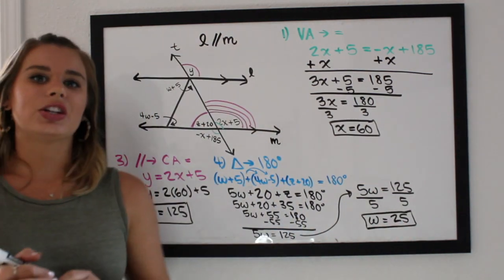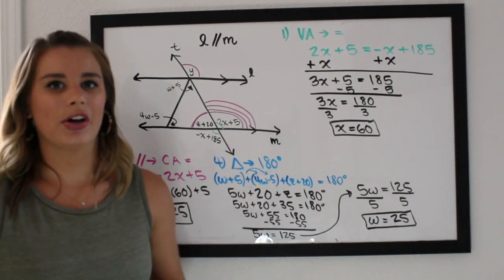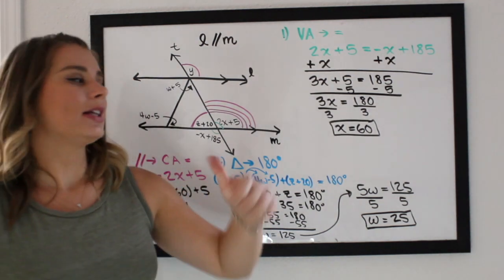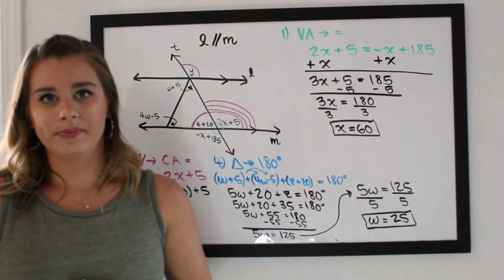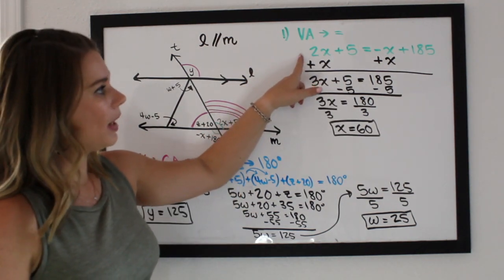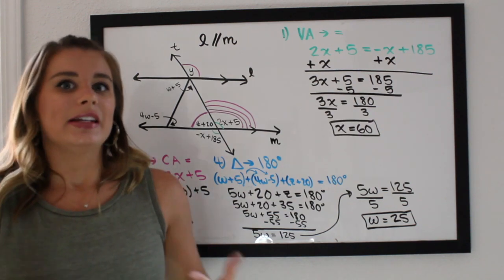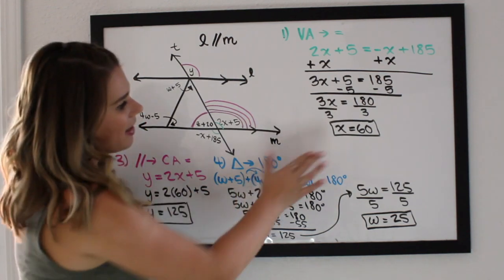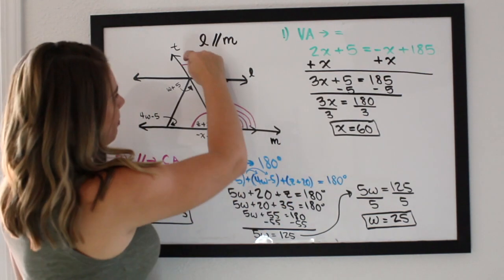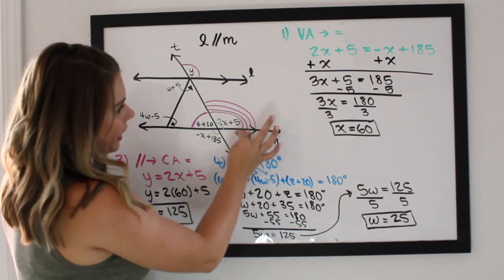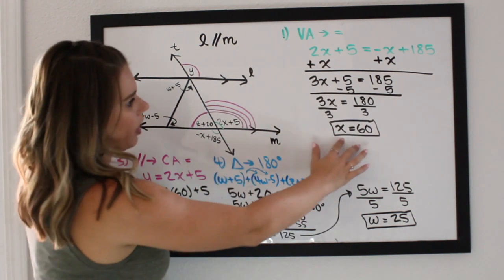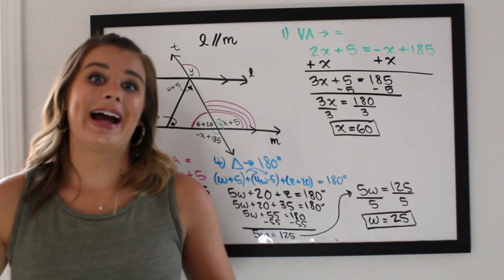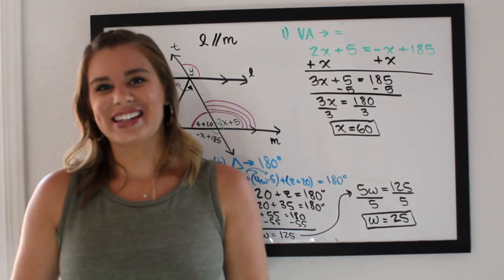And using our angle relationships, we were able to solve for all variables in this diagram. So just remember the key points here. Step 1 is you always tell your reader what theorem you're using. Step 2 is you come up with your equation. And then step 3 is solve. Now you have to make sure that you answer the question that's being asked of you, because sometimes they don't really care about what the variable equals, but they might want to know what the full angle equals. So then you'd have to plug back in whatever you got for x, for example, to find the measure of this angle. So just be careful on problems that might ask you to do that at the end. And that's all for today.